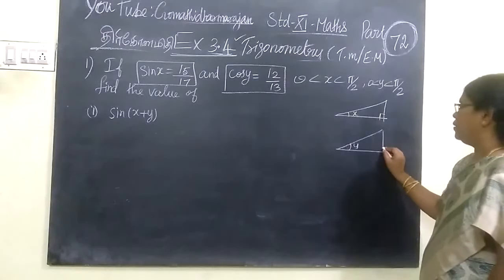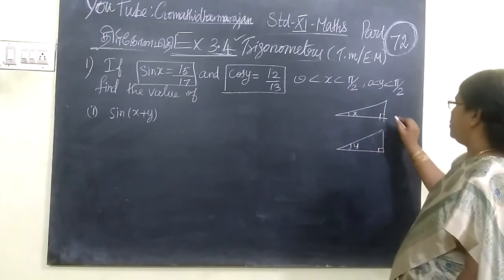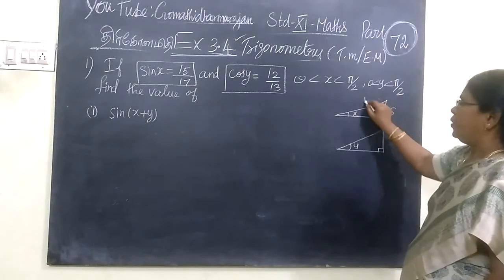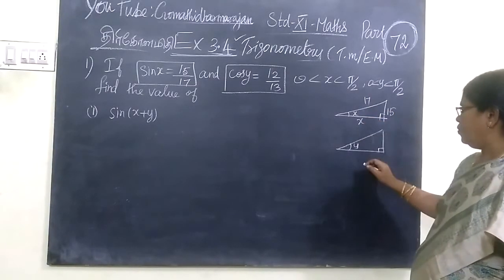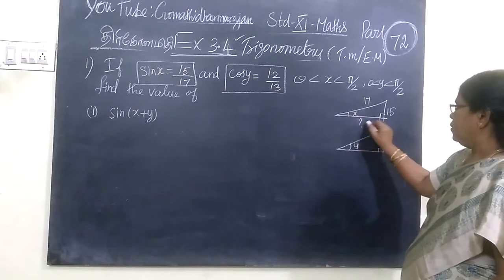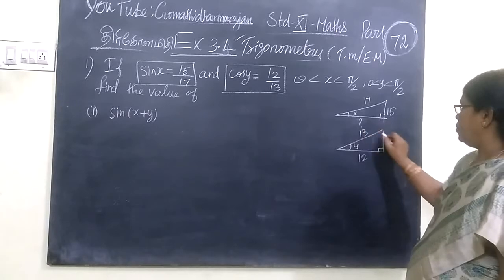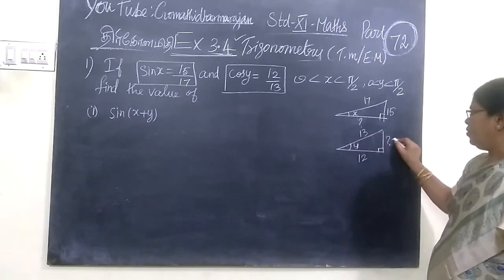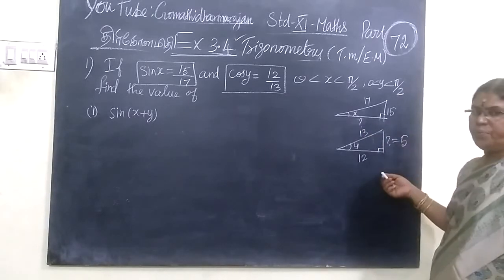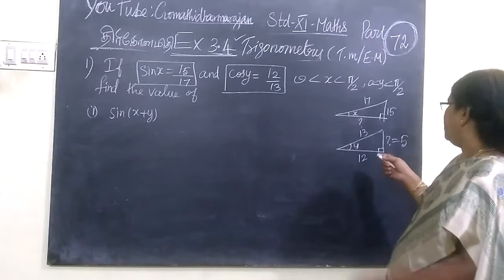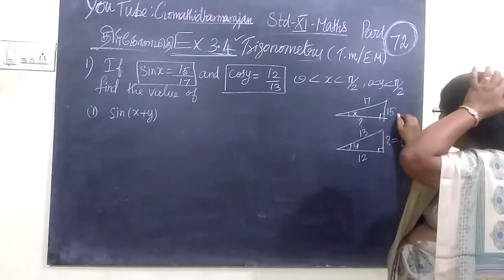So, using that, opposite y over hypotenuse. So this we want to find. Then next one, adjacent by hypotenuse. So this we want to find. We will find this now. I think you know it's better. This is what we need to find.